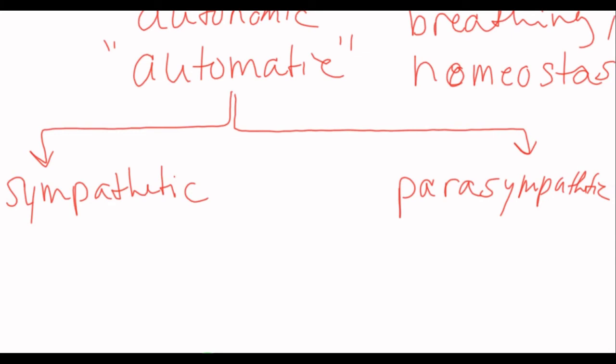So, the sympathetic nervous system is going to control fight or flight, and the parasympathetic is going to control rest and digest.